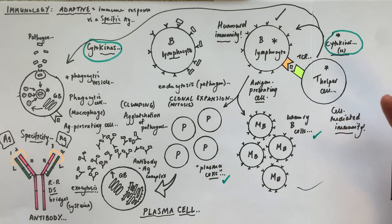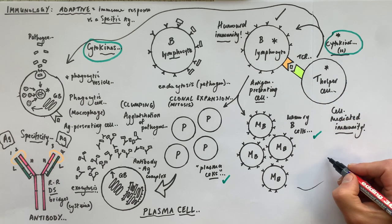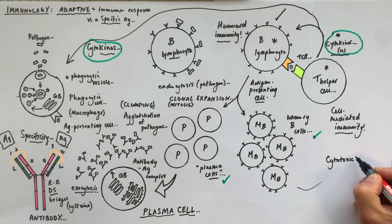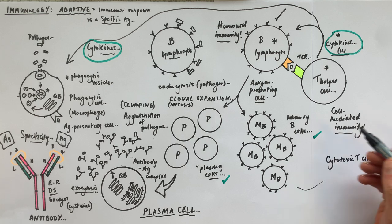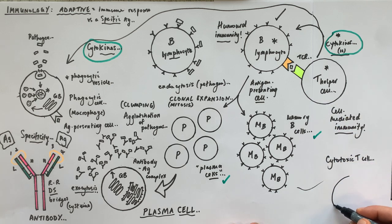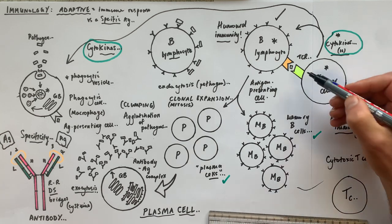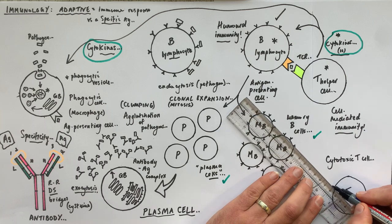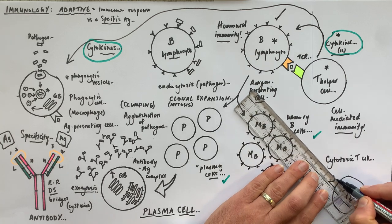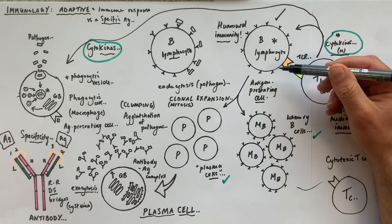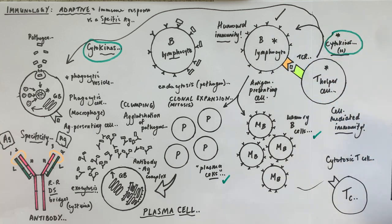There is another type of T cell — not a T helper cell — called a cytotoxic T cell. The cytotoxic T cell also has T cell receptors on its cell membrane, but these don't interact with antigen presented on an antigen-presenting cell like a B cell.